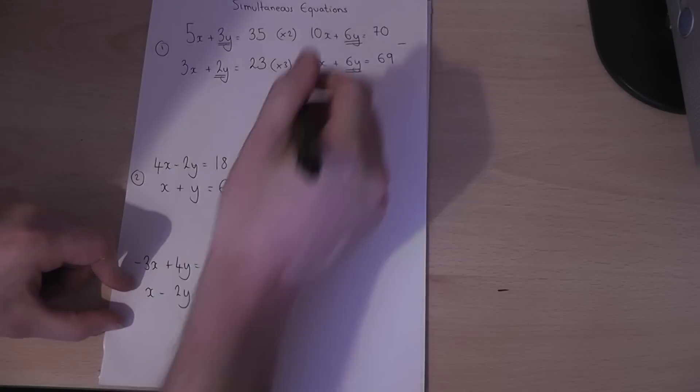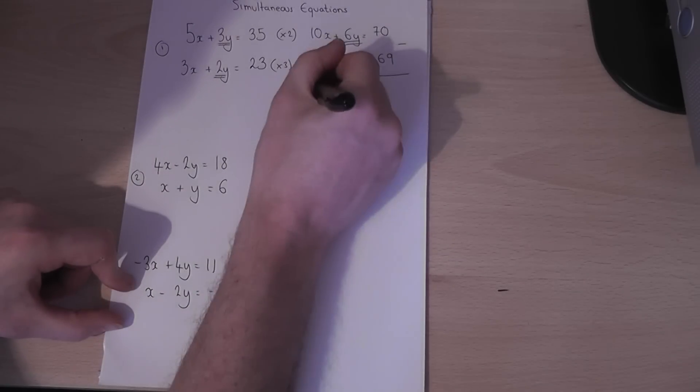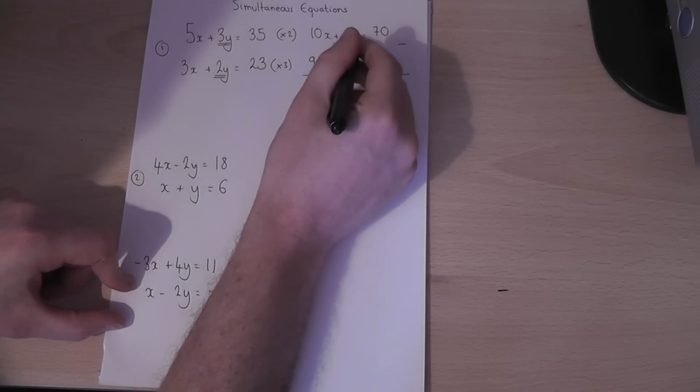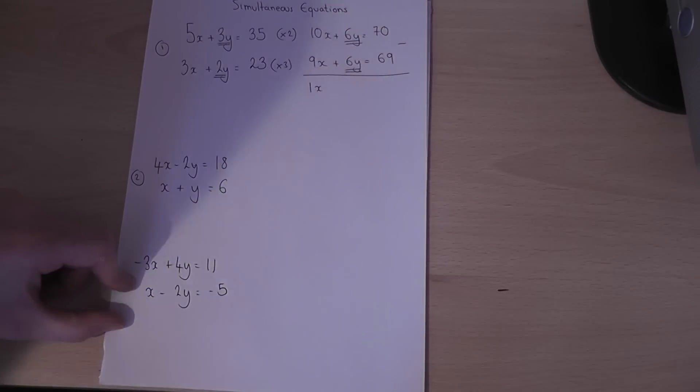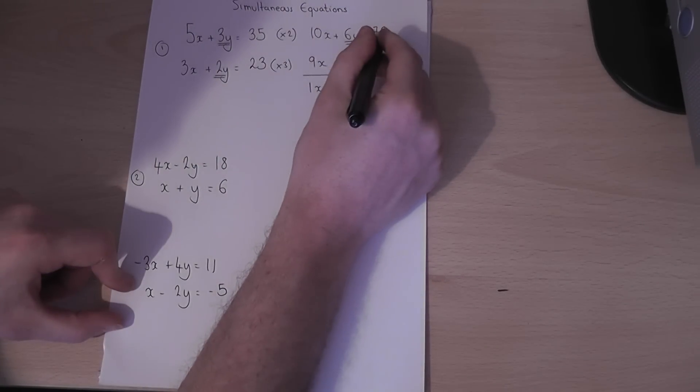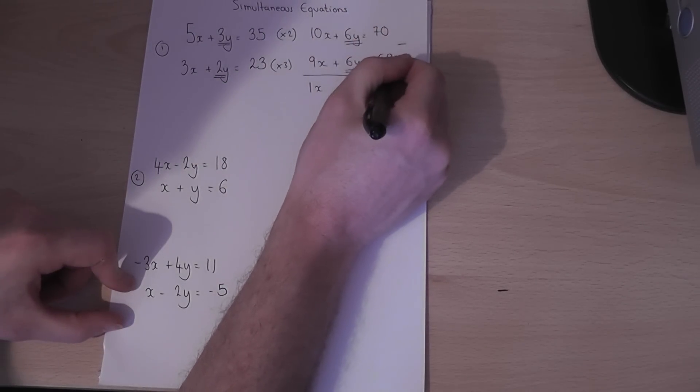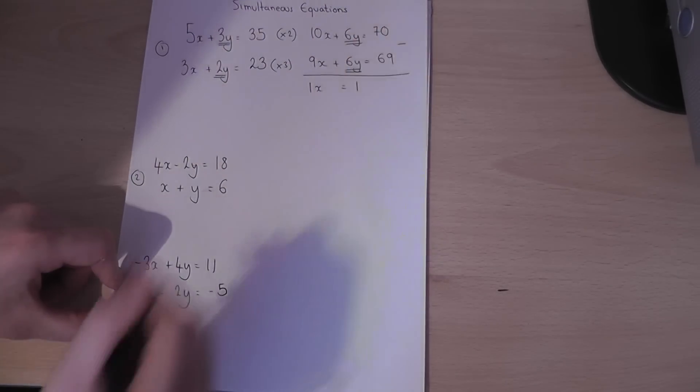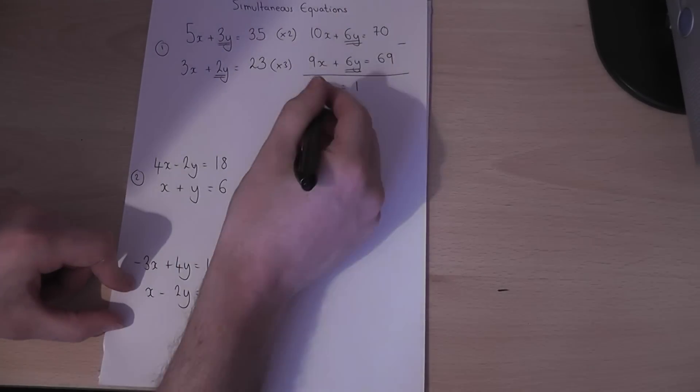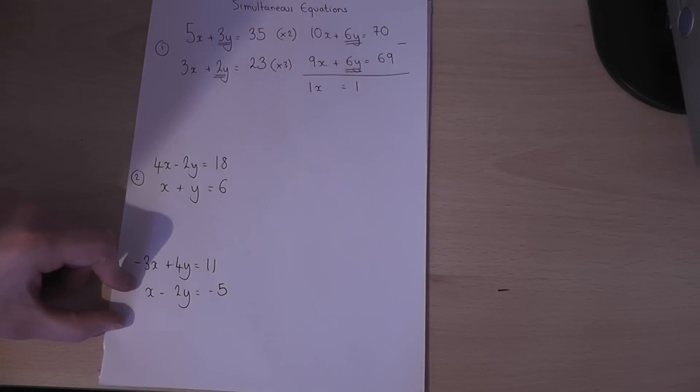They subtract the second equation from the first equation, watch what happens. 10x take away 9x is 1x. The 6y's cancel out and 70 take away 69 equals 1. So 1x equals 1, i.e. x equals 1. So we've found one of the letters.